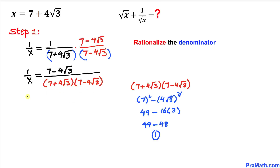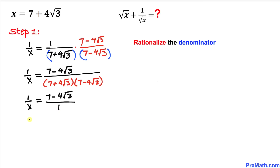So therefore our equation becomes 1 divided by x equals 7 minus 4 times square root of 3 divided by 1. Thus we can write 1 over x equals 7 minus 4 times square root of 3.